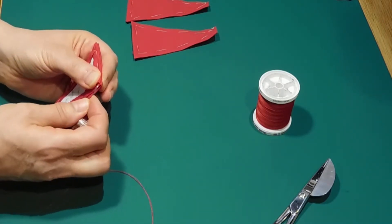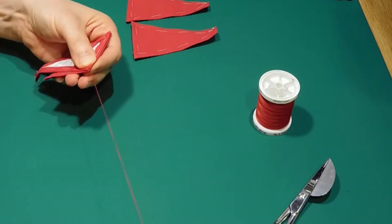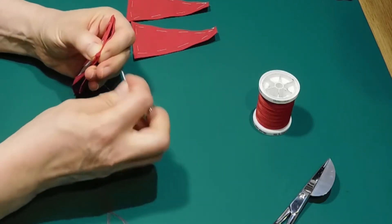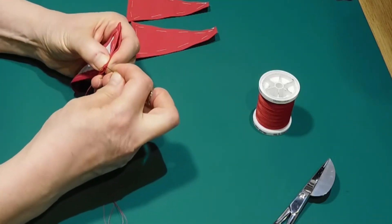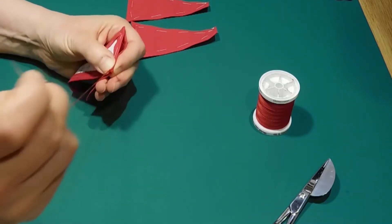Secure your thread at one corner and begin to over sew or whip stitch the two pieces together, catching just the fold edges of the material, not the card if possible. Try to ensure that your stitches are quite close together.